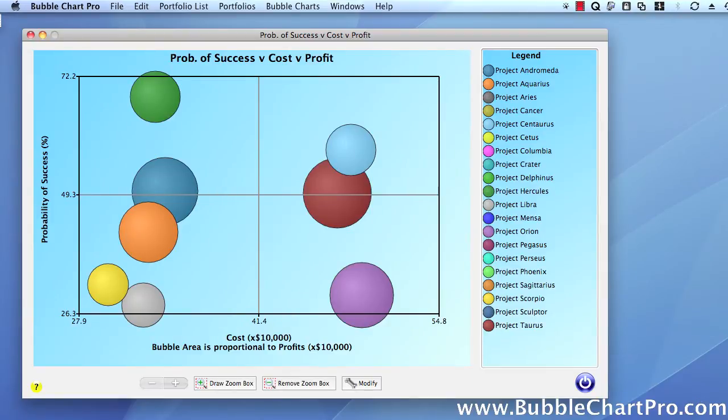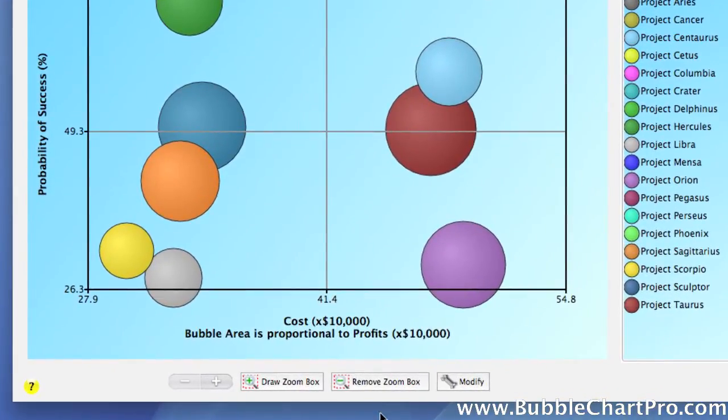Notice how the chart immediately redraws to display only the bubbles whose centers were contained within the zoom box. As you can see, this is a really powerful way to drill down into groups of bubbles on the chart. To restore the original chart dimensions, you simply click Remove the Zoom Box, and the chart is restored to its original coordinates.